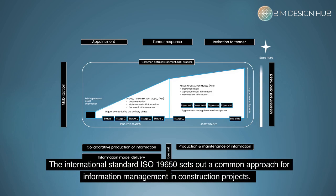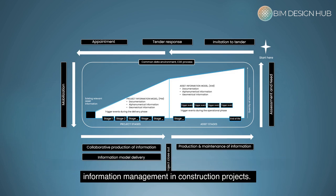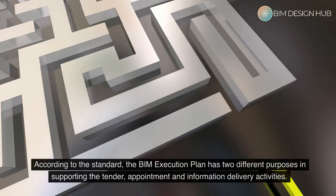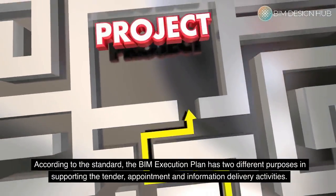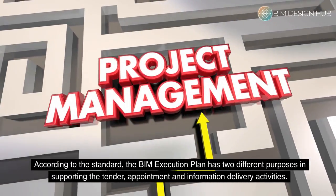The international standard ISO 19650 sets out a common approach for information management in construction projects. The standard defines the BIM Execution Plan as a plan that explains how the information management aspects of the appointment will be carried out by the delivery team. According to the standard, the BIM Execution Plan has two different purposes in supporting the tender, appointment and information delivery activities.